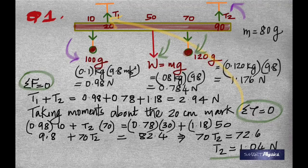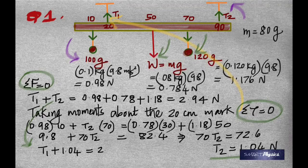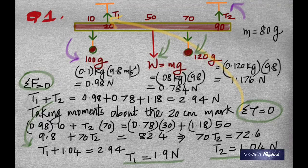Dividing 72.6 by 70 gives T2 as 1.04 Newtons. Going back to equation one and substituting, T1 plus 1.04 equals 2.94, from which T1 equals 1.90 Newtons. This is a good example of how we use the two conditions for equilibrium: net force equals zero and net torque equals zero. Thank you — I hope you understood. Please share this video and like it so that physics is made popular.